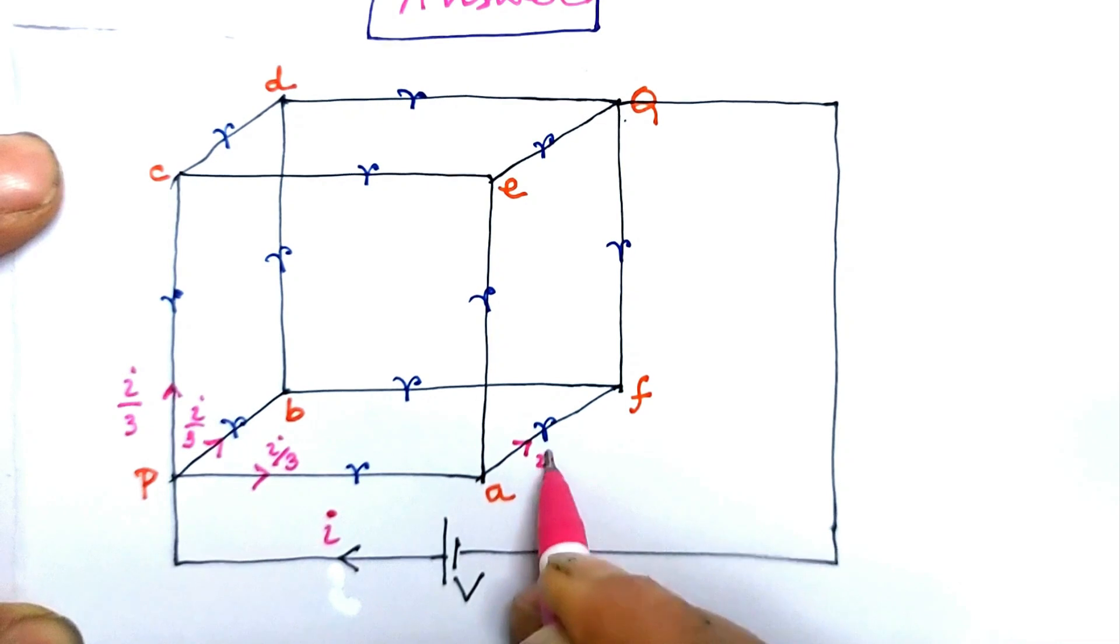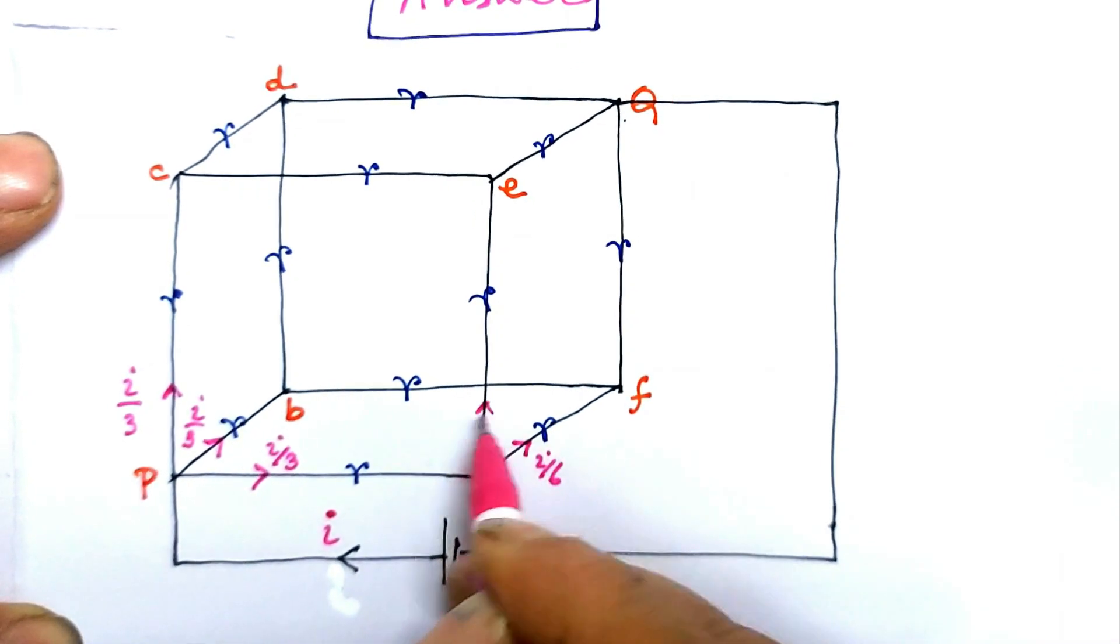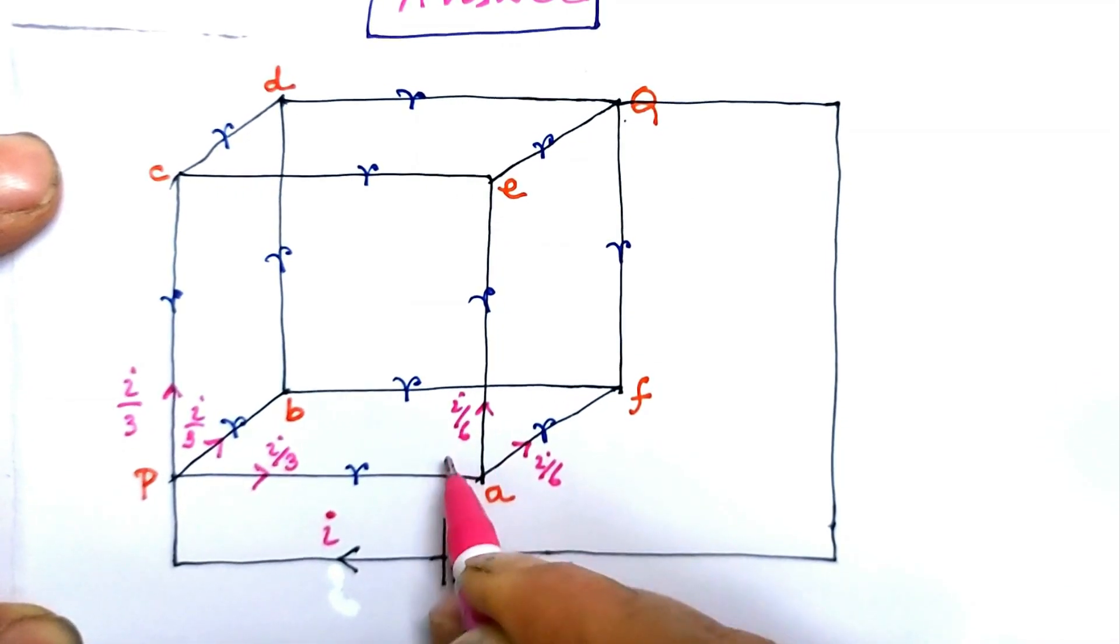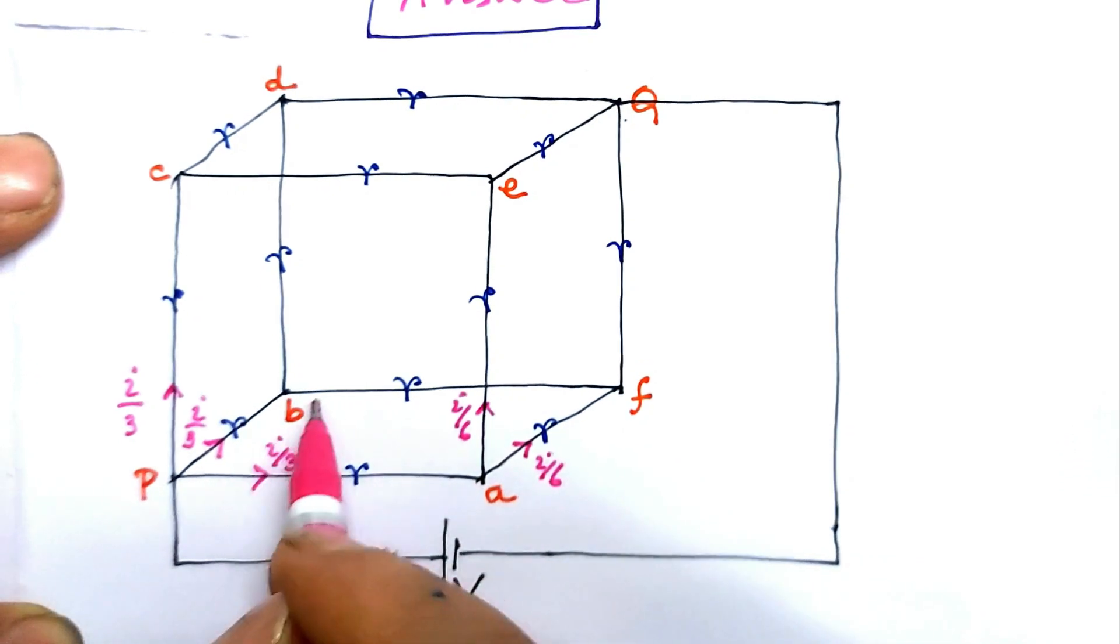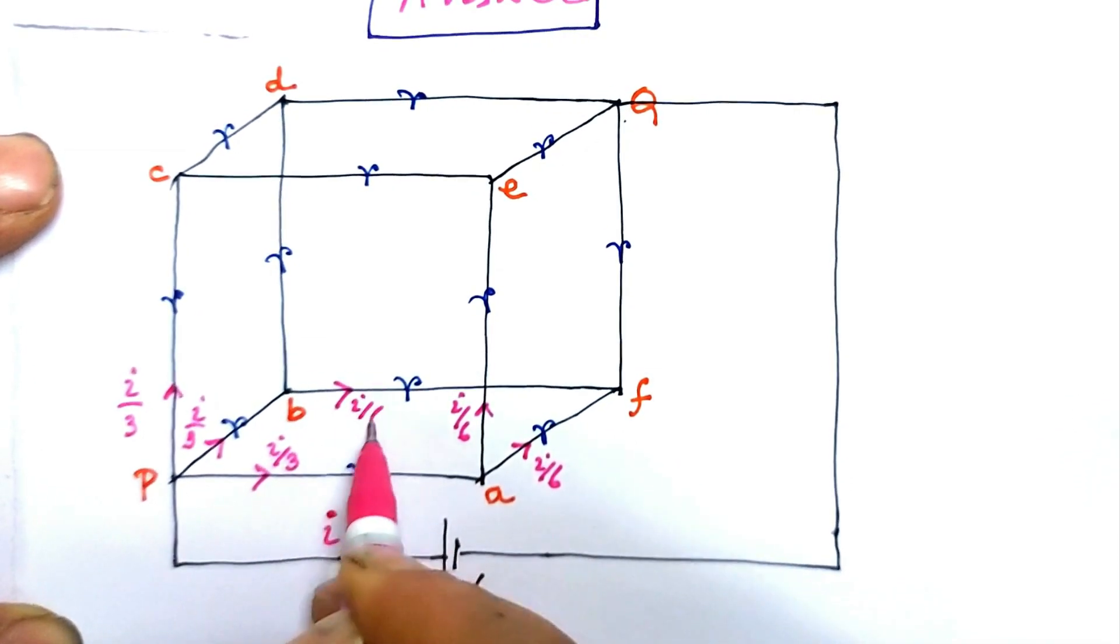i by 6 along af, i by 6 along ae. Similar division at point b occurs, so i by 6 flows along bf and i by 6 flows along bd.